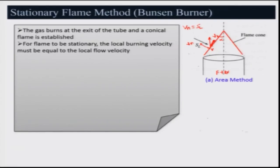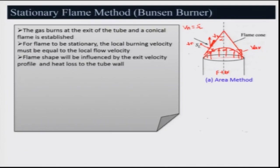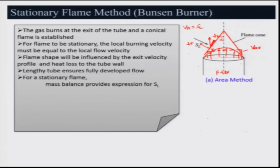There might be some velocity profile at the tube exit, but in this calculation we will take the average velocity of that profile. This is a hypothetical average velocity V_average that we are considering. The flame shape will be influenced by the exit velocity profile and heat losses to the tube. The tube length must be sufficient to ensure fully developed flow at the exit.